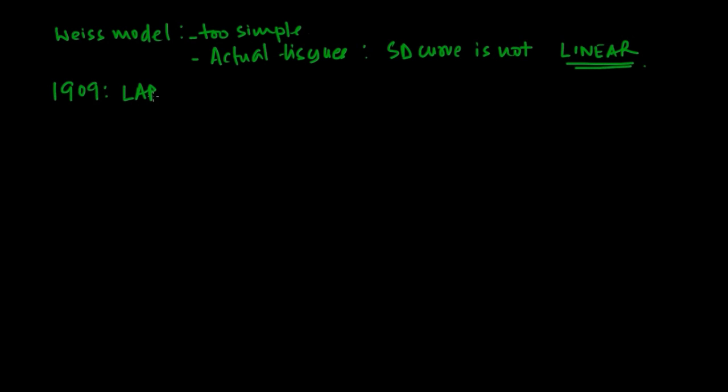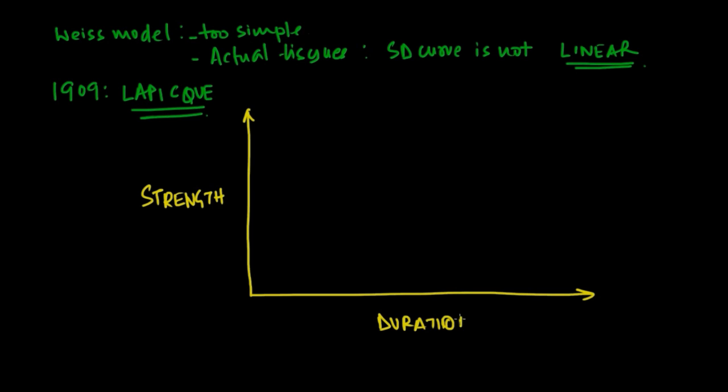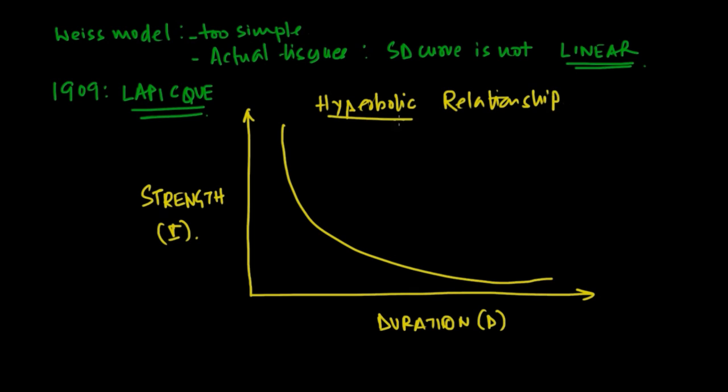Pretty soon people realized that the Weiss model was simplistic and essentially a mathematical model. The observations were not correlating with physiological observations because the strength-duration curve in later experiments was found not to be linear.